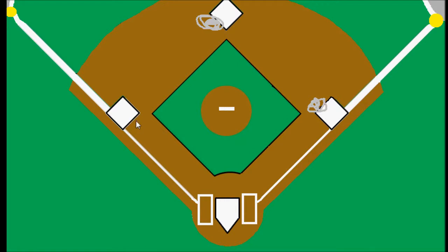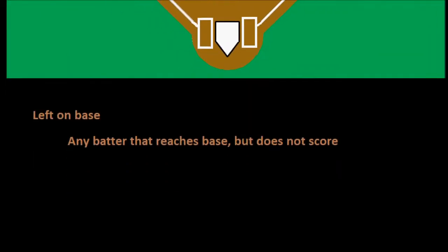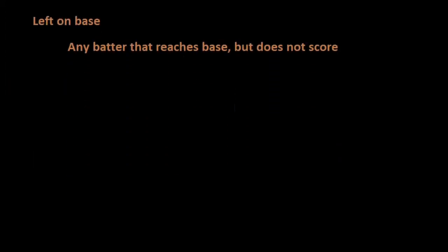It's pretty obvious that the most any team could leave on base in one inning is three. And then we can also break this down — there's another category that we use called scoring position.